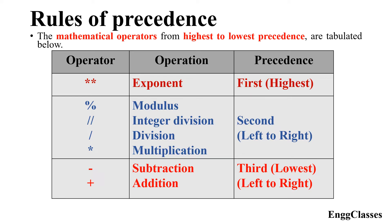The first operator, written as two multiplication signs (**), is called the exponent operator. It has the highest precedence. For example, 2**3 equals eight — two to the power three. After exponent, we have modulus, integer division, division, and multiplication, which have the second level of precedence.